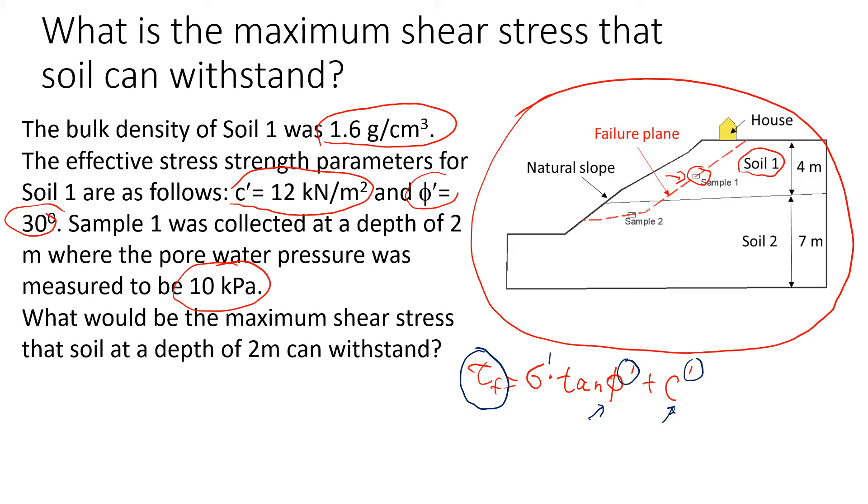First we'll find the total stress, which is the unit weight of soil times the depth where the sample was collected from. We know it's going to be unit weight of soil times 2 meters. To find the unit weight of soil, we need to know the density, which is given to us. So it's 1.6 times 9.81, which will be the unit weight of soil.